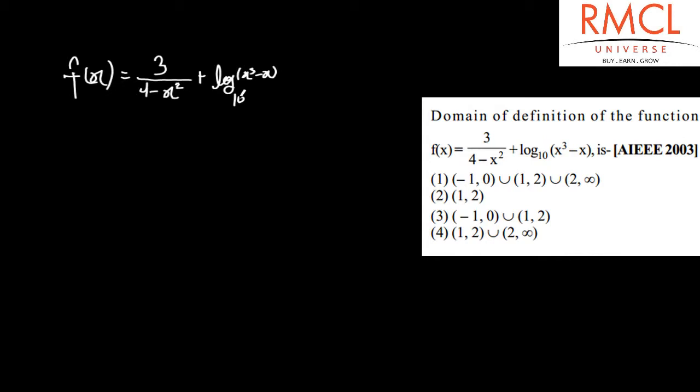So first, 4 minus x square is not equal to 0, otherwise it will not satisfy. So if this is not equal to 0, then x does not equal to 2 and minus 2.